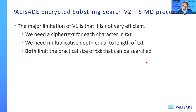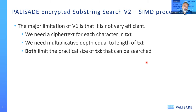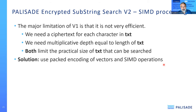What's wrong with version one? It's not very efficient and it's limited. First, you need a ciphertext for every character in text — ciphertexts can be large, so this is a large increase in memory requirement. Second, you need a multiplicative depth equal to the length of the text you're going to search. Generally multiplicative depths used are on the order of 20 or 30, not thousands. Increasing the multiplicative depth causes Palisade to increase overall system memory and computation requirements, so both factors limit the practical size of text that can be searched.